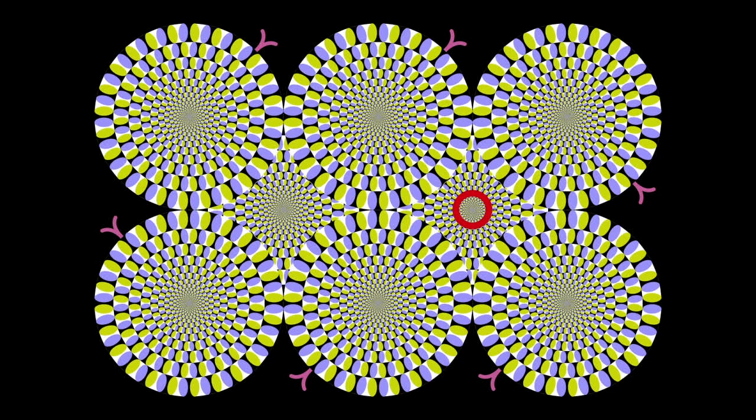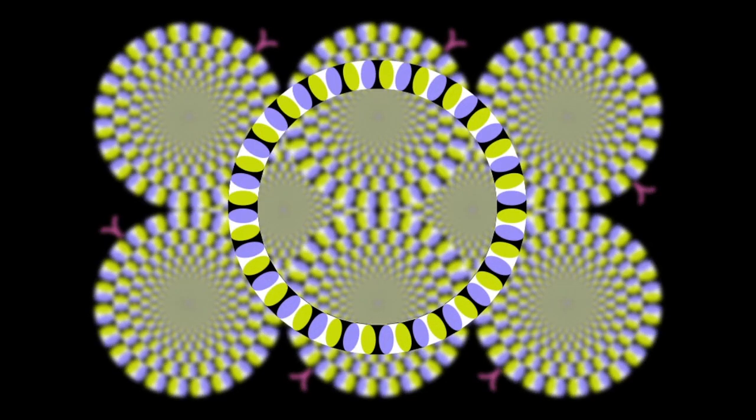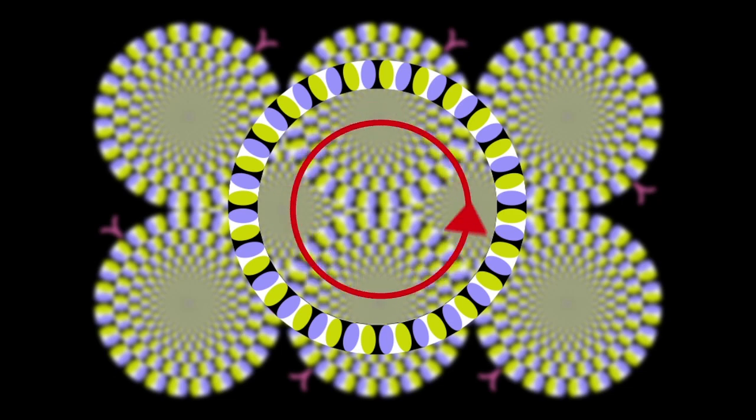This is due, in part, to how we perceive light and dark, and in part, to our eye movements. The sequence of light, dark, and colored segments in each of these snakes tricks the motion-sensitive neurons in your brain into responding as they would to real, physical motion.